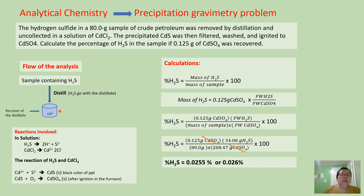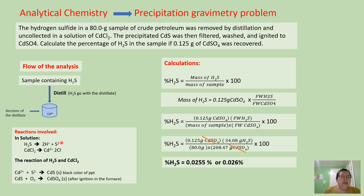Our receiver contains an aqueous solution of cadmium chloride. This cadmium chloride acts as a collector for hydrogen sulfide. During distillation, when the hydrogen sulfide reaches the receiver, a reaction takes place. The hydrogen sulfide in aqueous solution ionizes to hydrogen ion and sulfide ion.